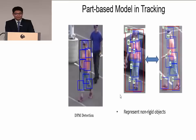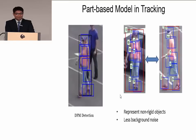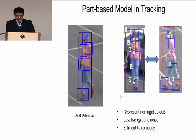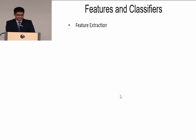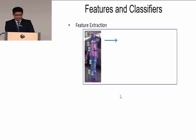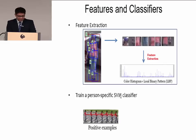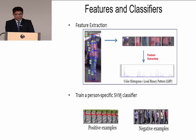It is a good choice to use the part-based model for tracking because: first, it represents non-rigid objects like humans; second, it contains less background noise; third, it is more efficient to compute than using the whole bounding box. Given the detection result, we put all parts together and extract features such as color histogram and local binary pattern. With these features, we train a person-specific SVM classifier. The positive examples are from the same person in previous frames, and the negative examples are from other persons. This SVM classifier is updated every couple of frames — so it is online learning.